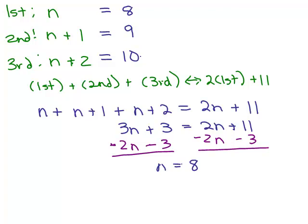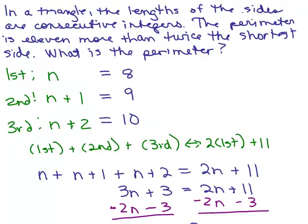And now, what's the question? I've got 3 consecutive integers, I did that part right. But the other thing it said was what? If we read this again, it said that the perimeter is 11 more than twice the shortest side. Let's make sure that's true. What would the perimeter of the triangle be if we had 8, 9, and 10? We'd have 8, 9, and 10. That adds up to 27.